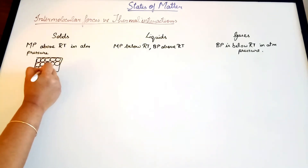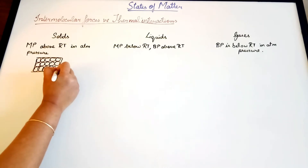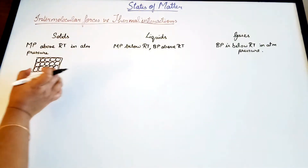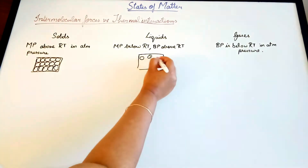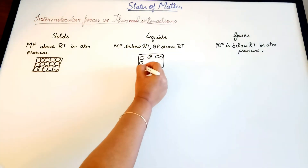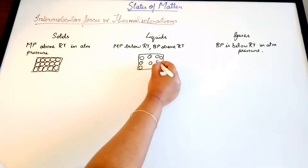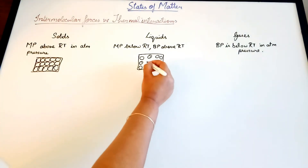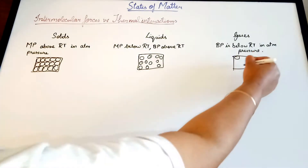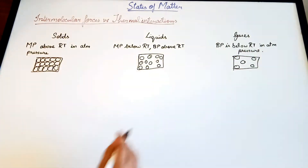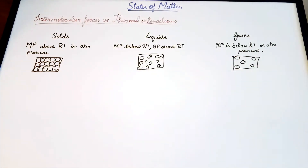Let's draw the structure — the arrangement of molecules in solids, liquids and gases. That will help us understand this concept better. In solids, these molecules are very close together, so they have a higher intermolecular force of attraction than liquids. Liquids are farther apart, and in case of gases, they are even more far apart than liquids. There is obviously a difference in terms of arrangement.